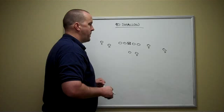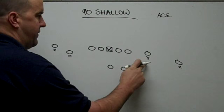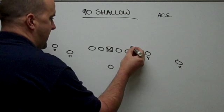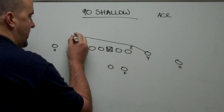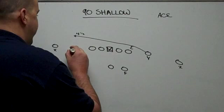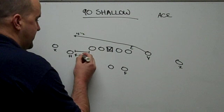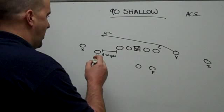Here we have an ace formation — a 2x2 set with X, H, F, Y, and Z. On the 90 Shallow, the Y is going to have the Shallow route. His aim point is the heels of the defensive lineman; he's going to come through the heels to a depth of about four and a half yards — he doesn't want to get any deeper than four and a half. The H is going to have a ten yard dig. The distance between the tackle and the H receiver needs to be eight to ten yards in order for this concept to work.